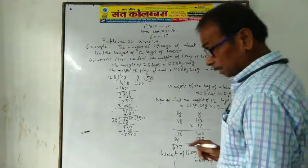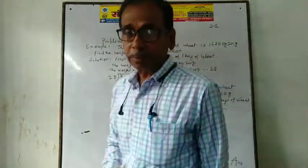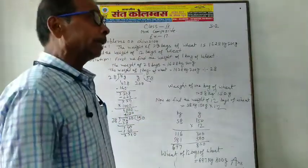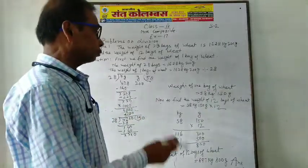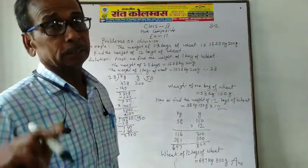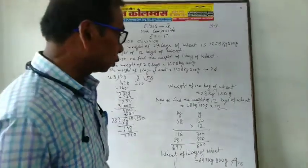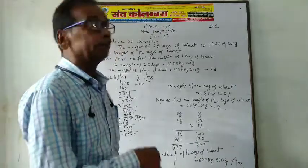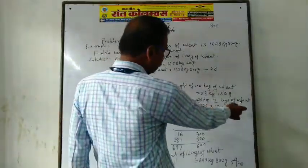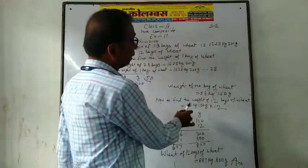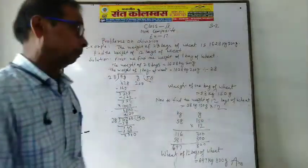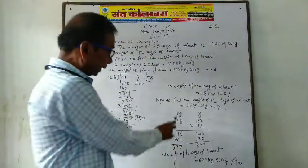Now, after finding the weight of 1 bag, we find the weight of 12 bags. If you take 12 bags, then you multiply the weight of 1 bag. The weight of 12 bags is equal to 58 kg 150 grams multiplied by 12.